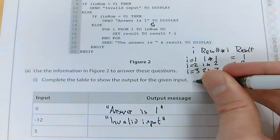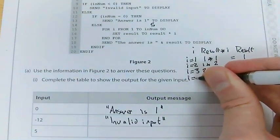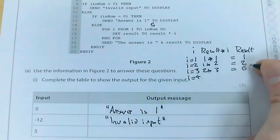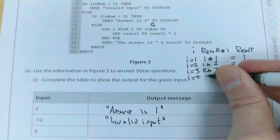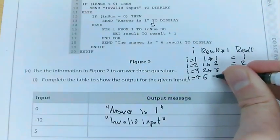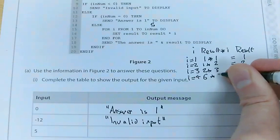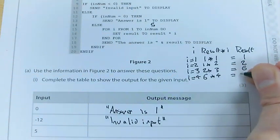Now, i equals 4. Because we haven't finished the loop. So now, result equals result times i. So at the moment, result is 6. And i is 4. So it's 6 times 4. Which is 24.